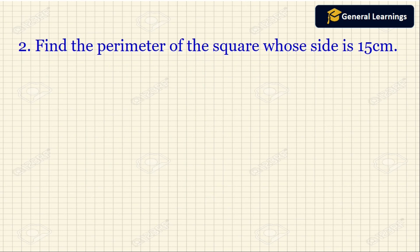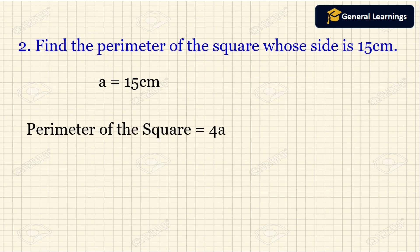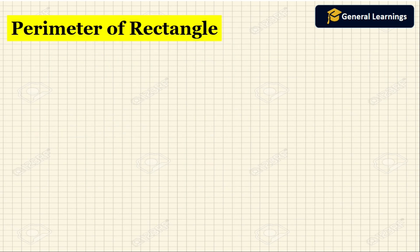Here they have given: find the perimeter of a square whose side is 15 centimeter. So a is 15 centimeter. The formula gives 4 into 15, which equals 60 centimeter. So the perimeter of the square is 60 centimeter.